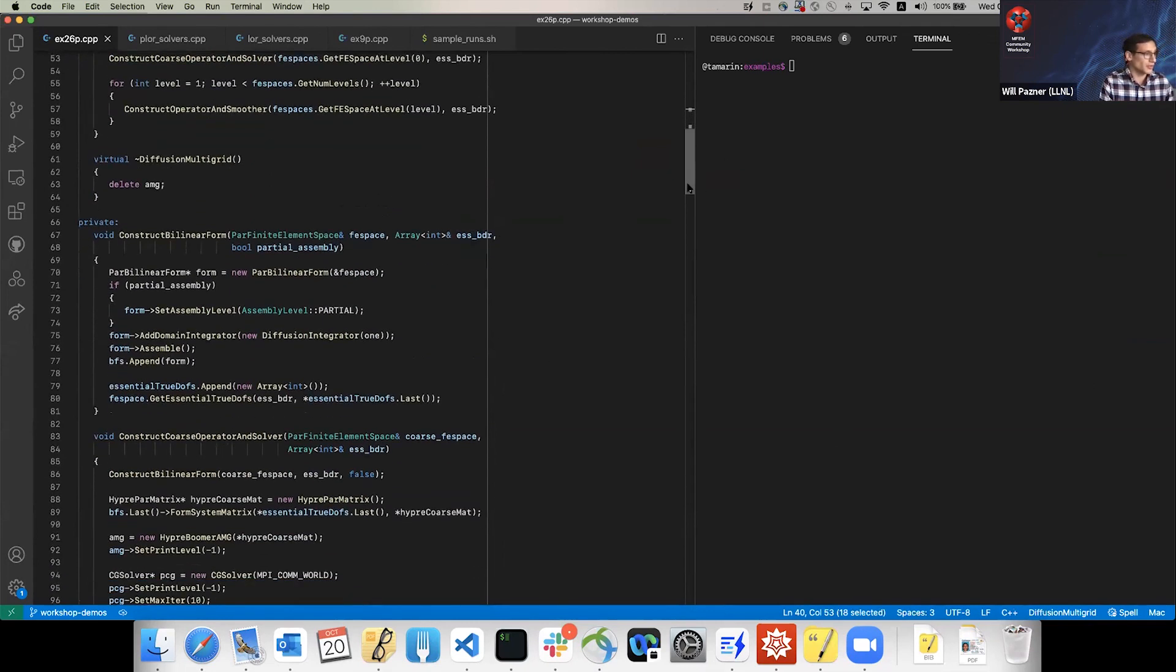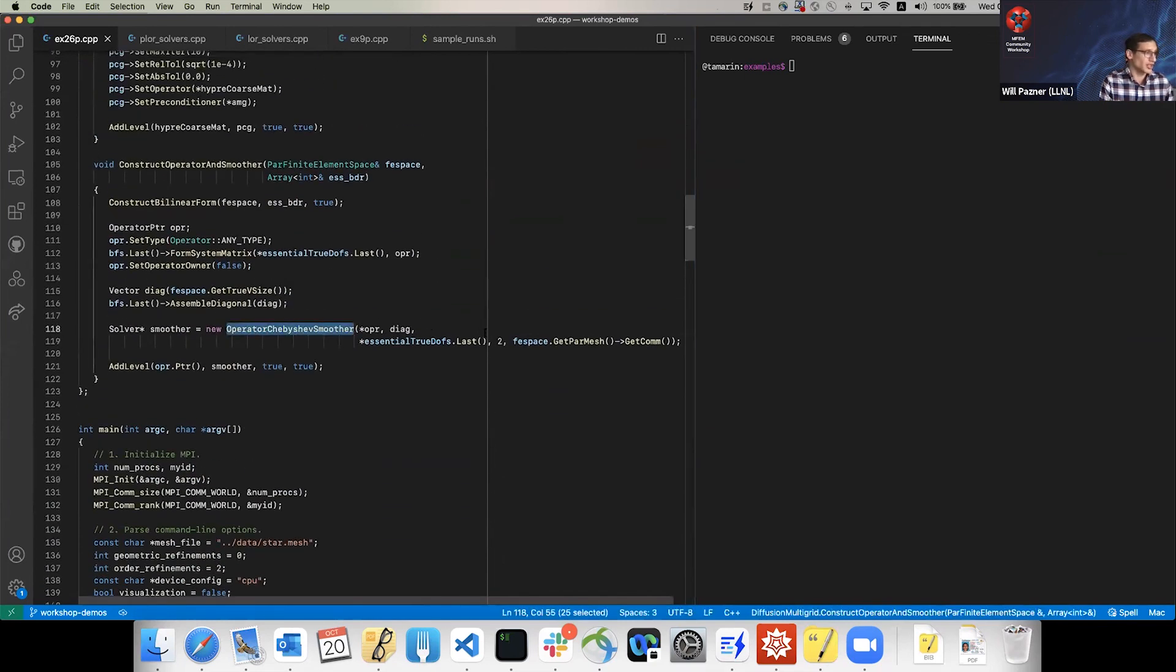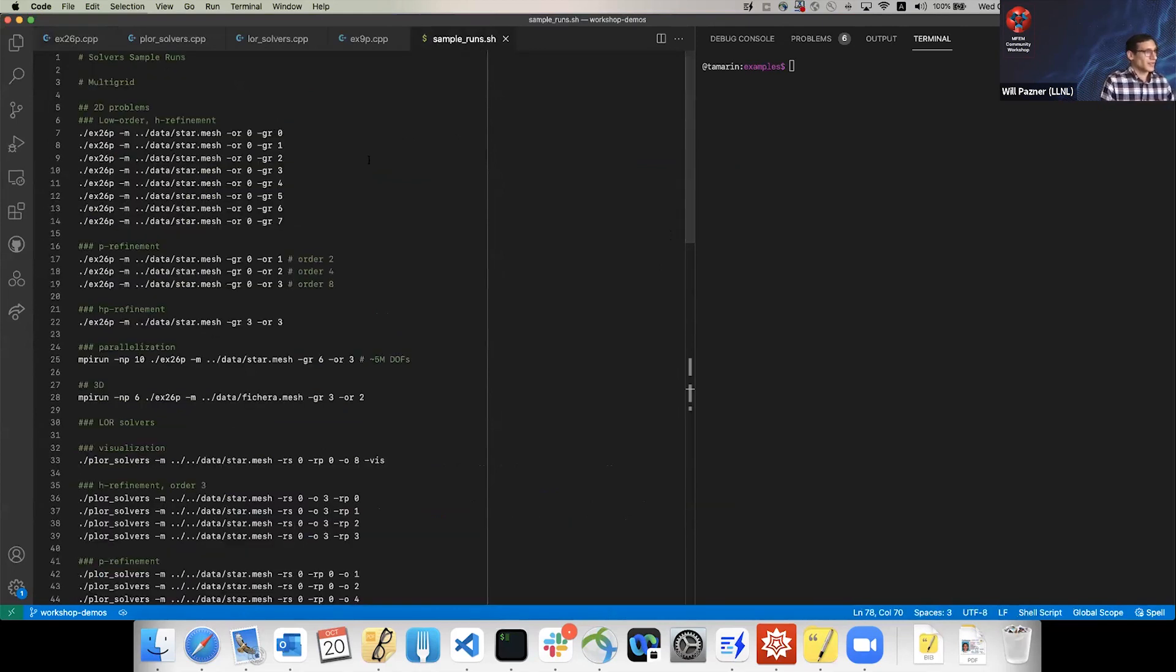Here, for instance, it would create a Chebyshev smoother. But as soon as you ask for something like Chebyshev smoother, this will automatically be matrix-free, it will be sum-factorized, and it will be on the GPU if you run on the GPU.